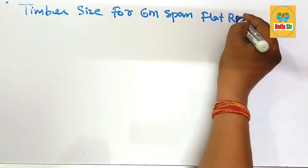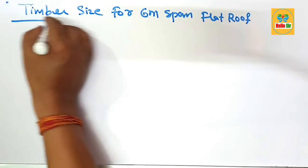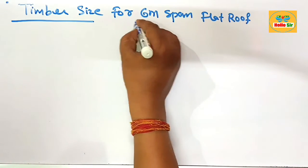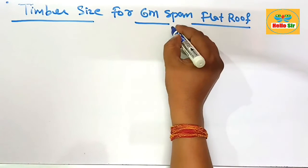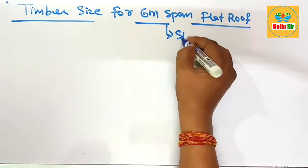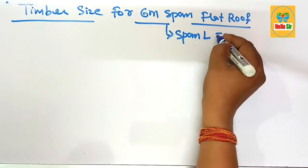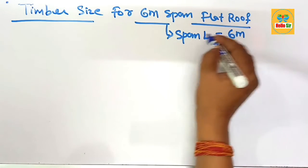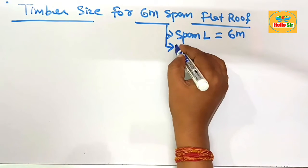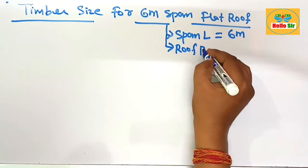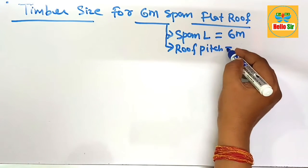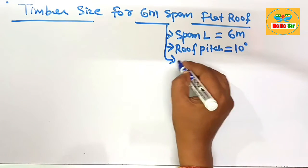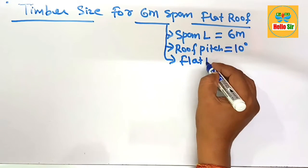You have to figure out what size timber required for 6 meter span flat roof. Here you have given the span length of joist that is about 6 meter and the roof pitch for the flat roof is maximum about 10 degree. That's why it is called flat roof.